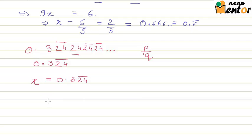Now here we see that 10x would be equal to 3.24 bar while 1000x would be equal to 324.24 bar.